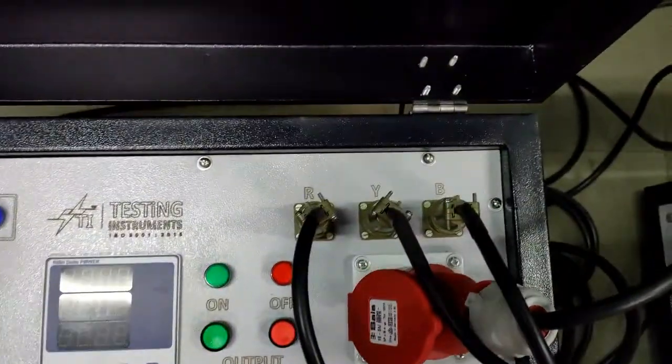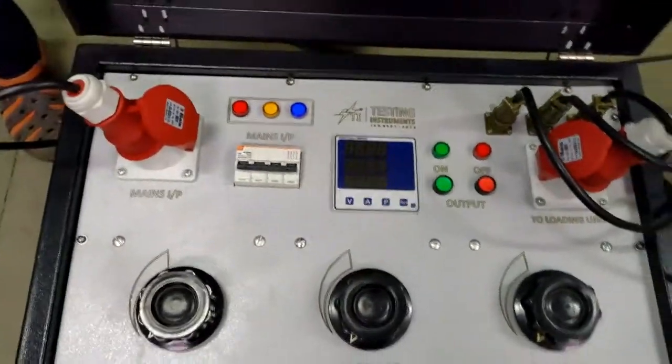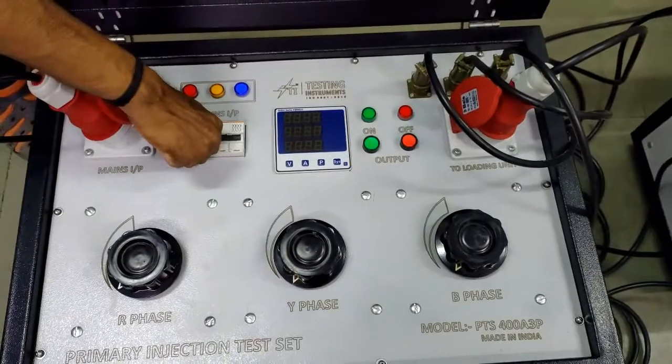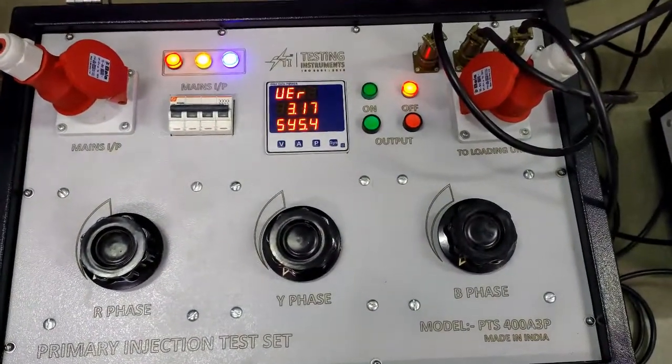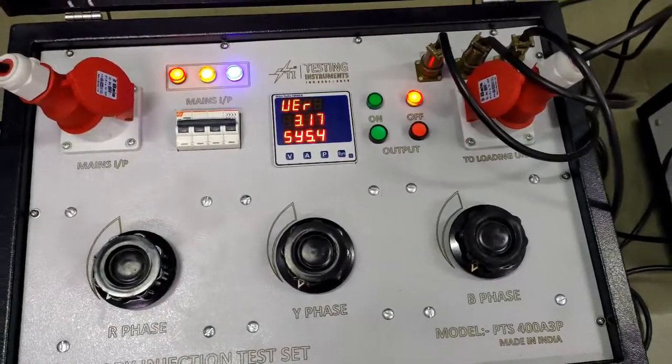Now we will make the mains on by opening MCB mounted on instrument control panel. See, we got the mains input and all phase indicators glow.